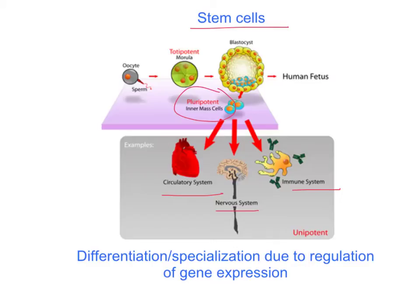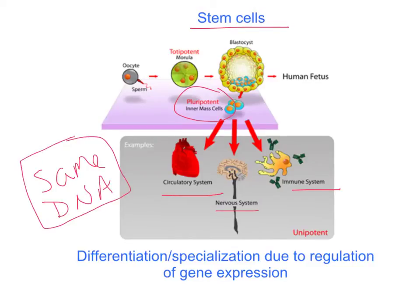The differentiation or specialization of those cells is going to be due to the regulation of gene expression. All of the cells in our body have the same DNA — the exact same DNA. But when we regulate which genes are turned on, which are turned off, which ones are expressed, that allows for differentiation and specialization into things like heart cells, nervous system, and immune system cells. Those stem cells are those initial undifferentiated, unspecialized cells.